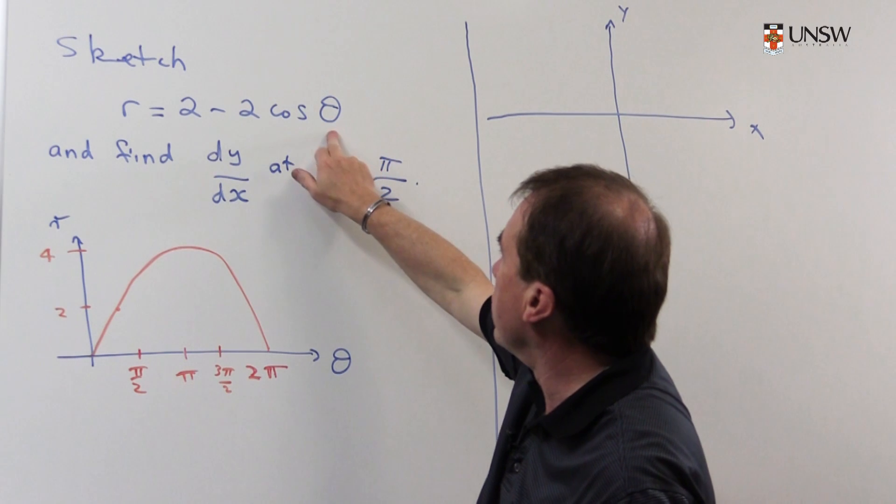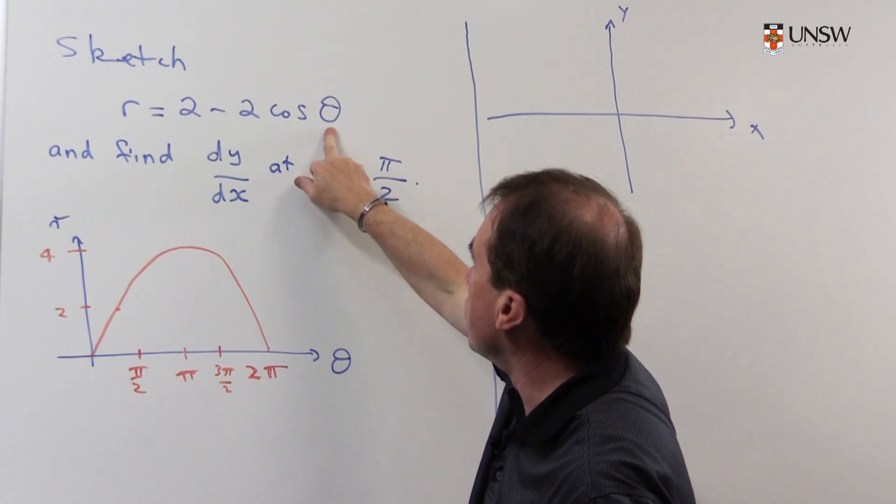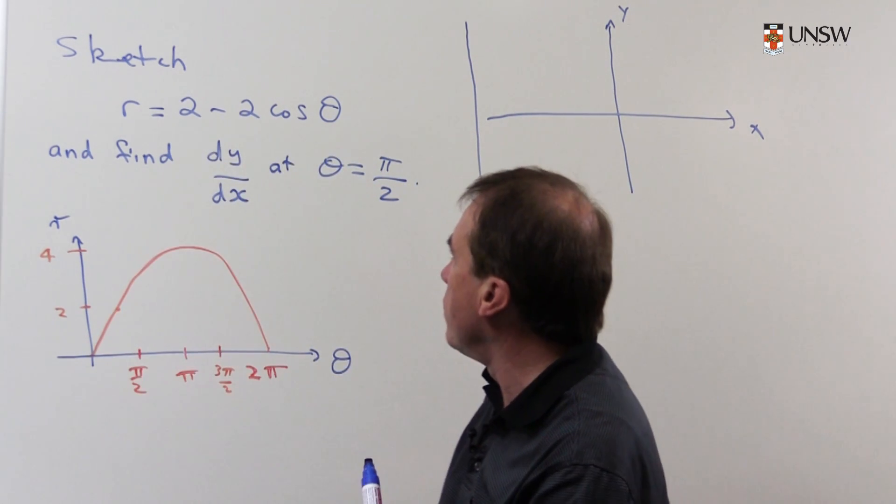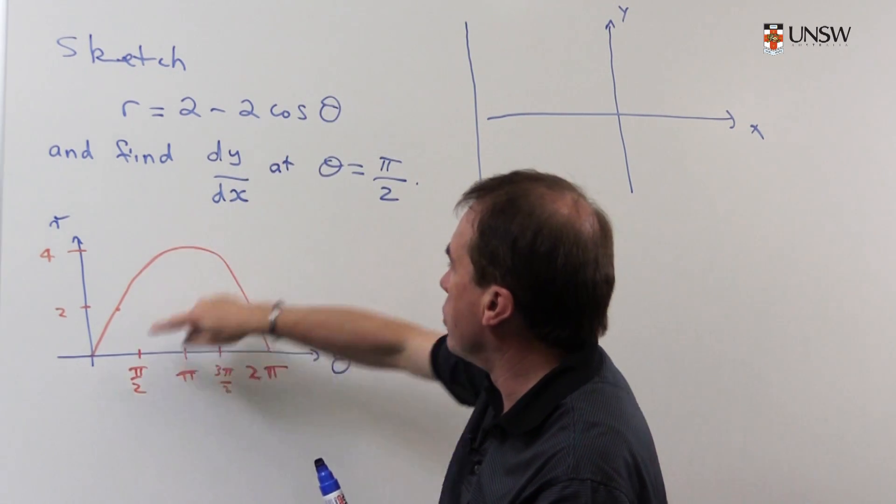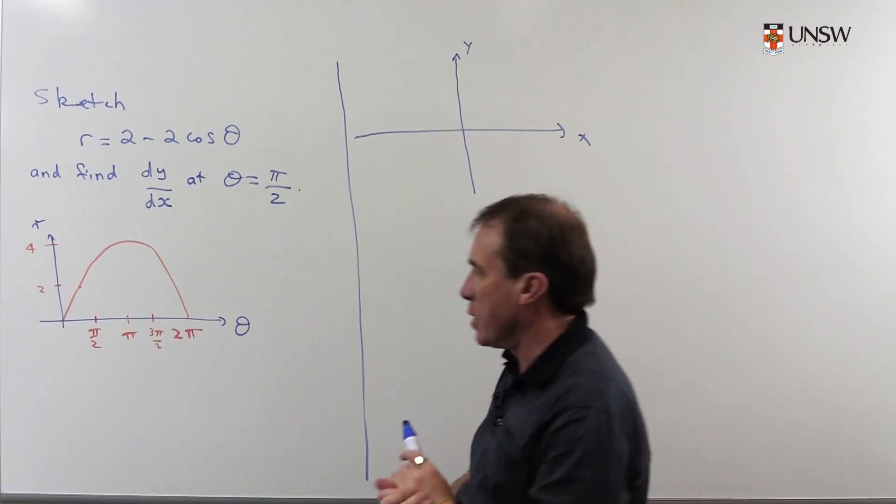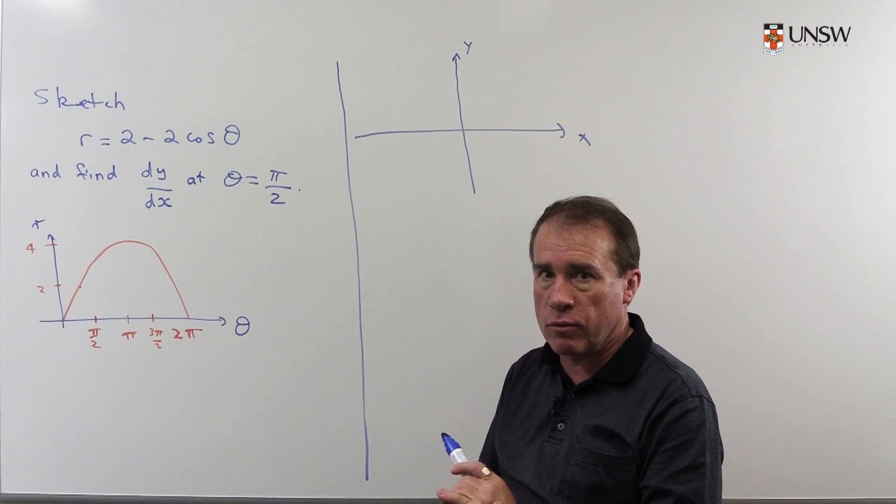Just as a quick check: when θ is 0, the cos of 0 is 1, so that starts at 0. At π it's up at height of 4, at π/2 it's up at height 2 and so on. There's the rough sketch of what it looks like.